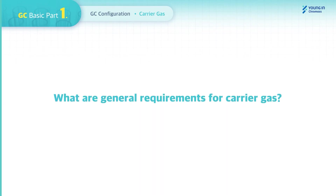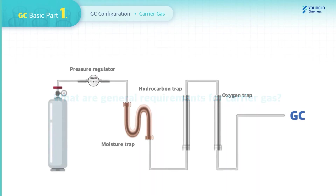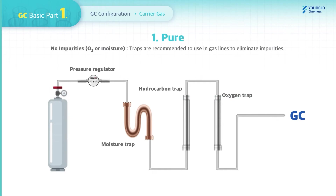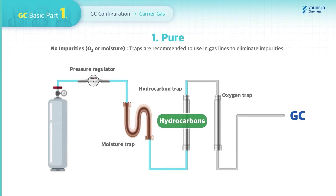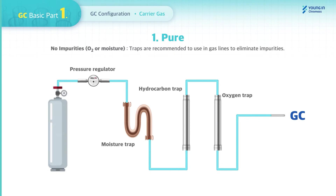What are general requirements for Carrier Gas? First, Carrier Gas should be pure — meaning there are no impurities in it. To keep the purity of Carrier Gas, traps are recommended in gas lines for the removal of impurities such as moisture, hydrocarbon, and oxygen. Carrier Gas must have a high purity standard of not less than 99.9995%.